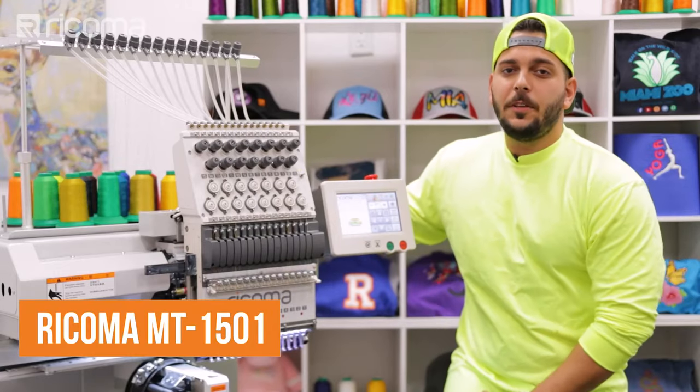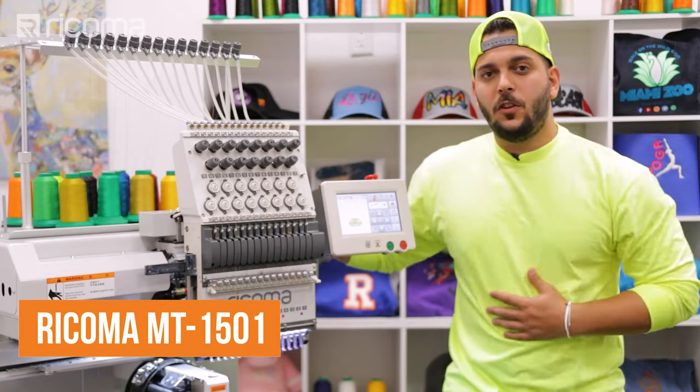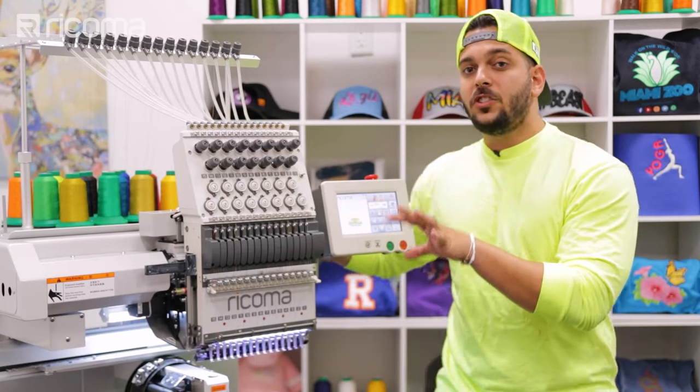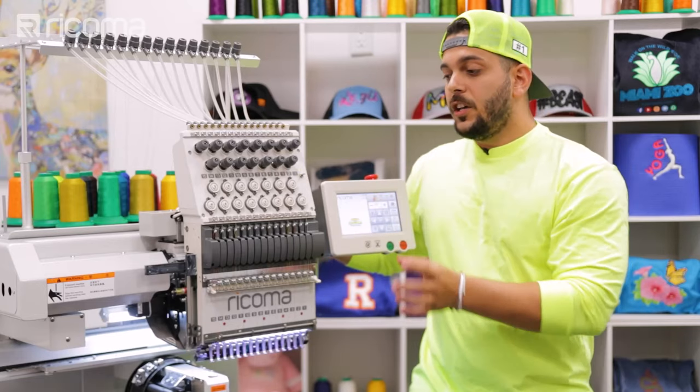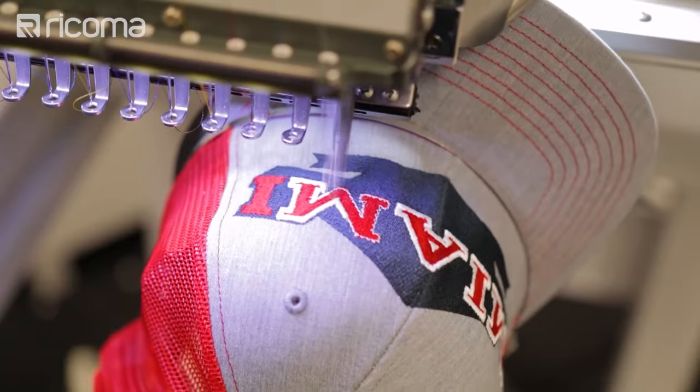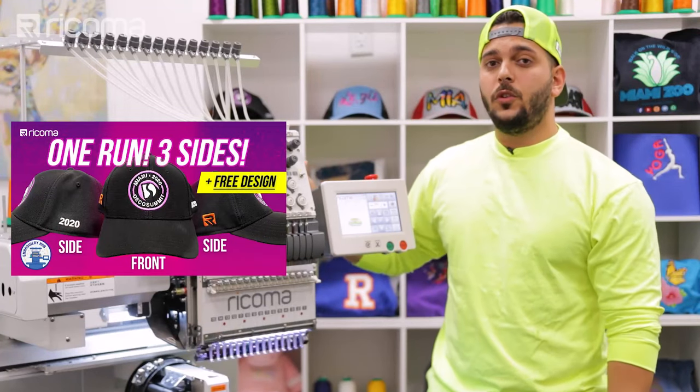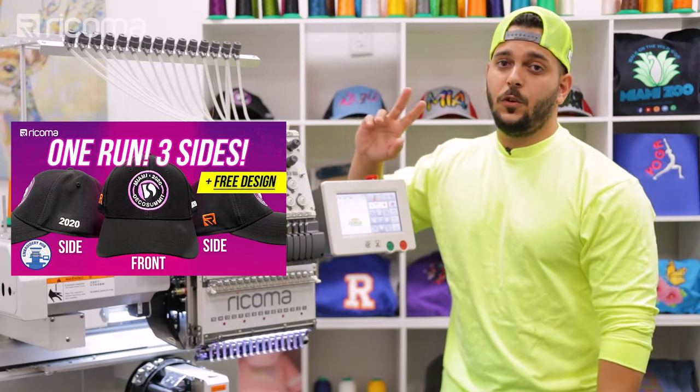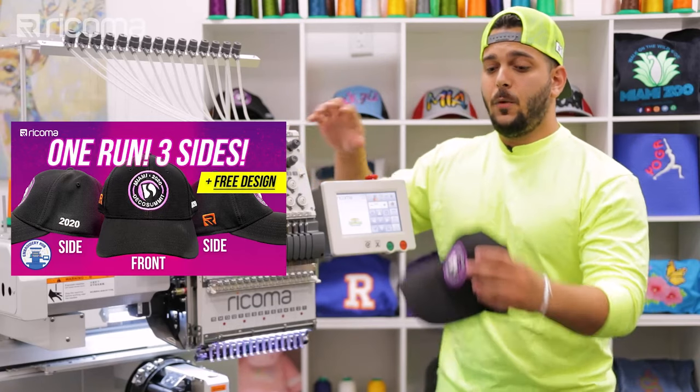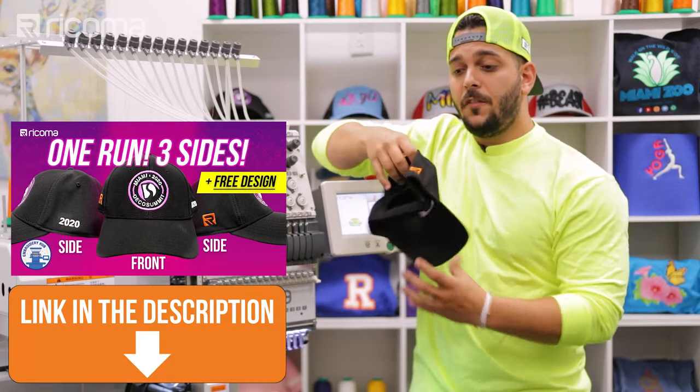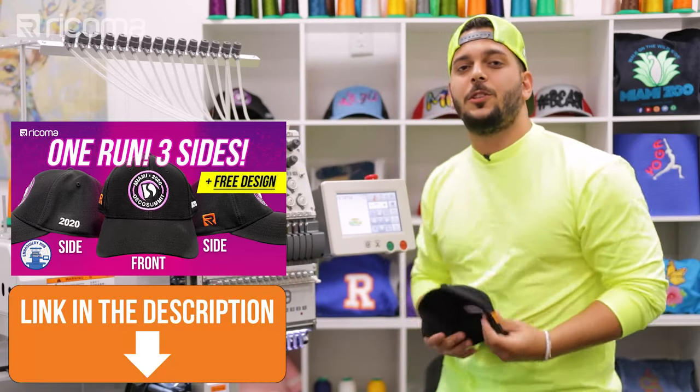For the machine, I'm going to be using the Ricoma MT-1501 like I mentioned before. The reason why I'm using this machine is because it has a cap rotation of 270 degrees. So I'm able to do in one run the front and the sides. We actually did a video on how to do this but on the MT-1502 which is a two head and we did both sides. We did the front as you can see here, one side and then we did the other side. If you want to check that video out, scroll down to the description below. In that video, we show you everything you need to know to make this happen, including digitizing.